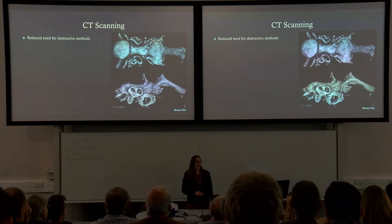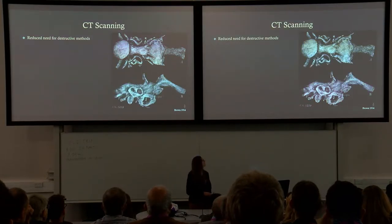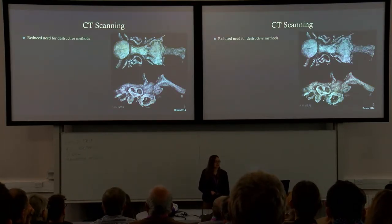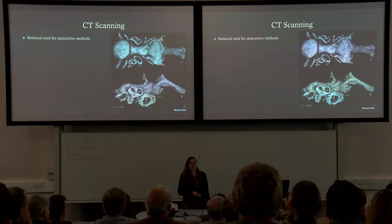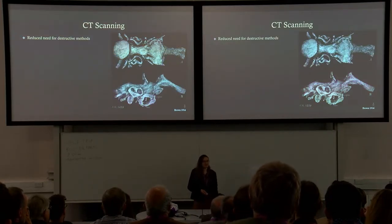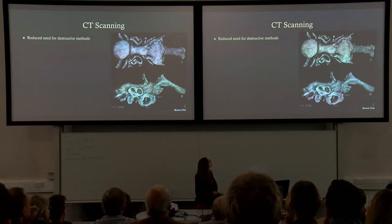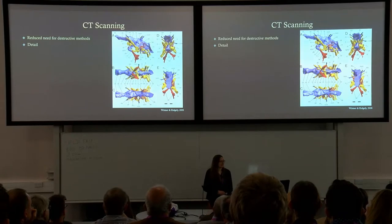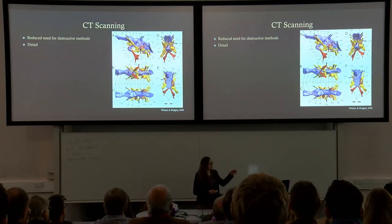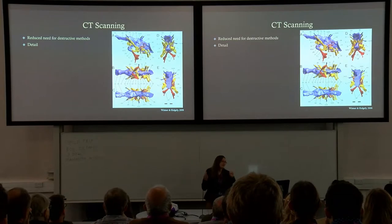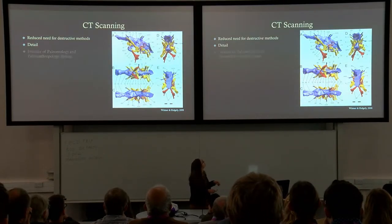To study internal structures we use CT scanning, which is great because it reduces the need for destructive methods. This is a resin cast of a Triceratops brain case from the early 1900s — to extract it, the skull would have had to be completely destroyed. CT scanning makes it much easier, and micro-CT scanning in particular can provide very high resolution. Post-processing digital editing allows the use of colors, making it reader-friendly and great for publications.